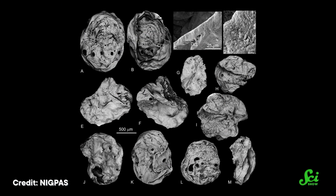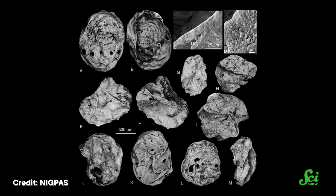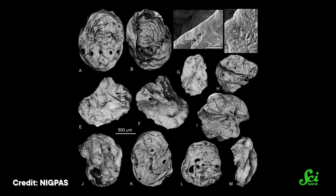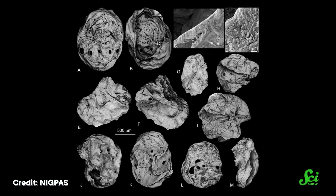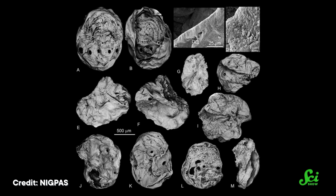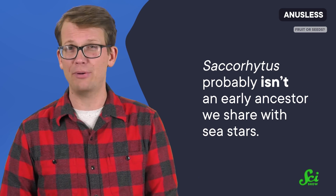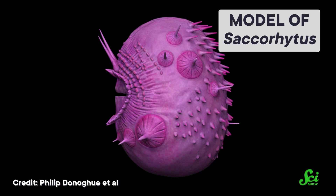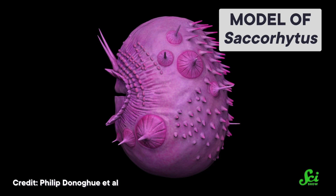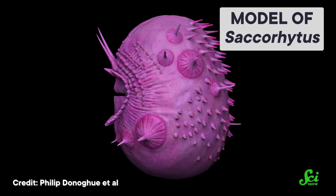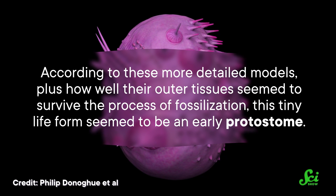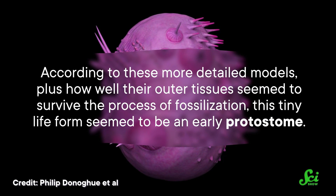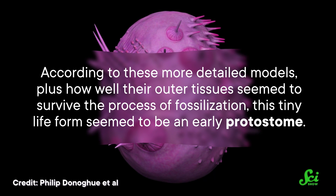But there were other hypotheses about where this animal fell on the family tree. So in new research, another team took an even closer look at hundreds of new and better-preserved fossilized specimens, firing X-rays and electrons at them to construct 3D models. Those models revealed that Saccorhytus probably isn't an early ancestor we share with sea stars. Those holes identified earlier as pharyngeal openings were only there because a bunch of spines had been broken off. According to these more detailed models, this tiny lifeform seemed to be an early protostome.